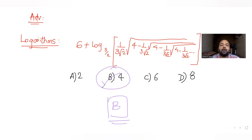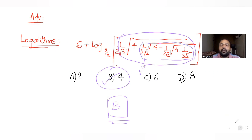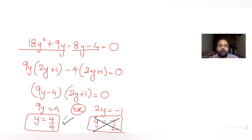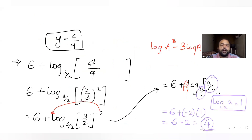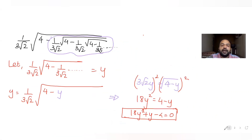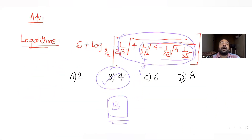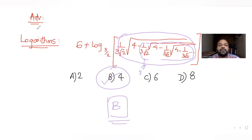I hope you have understood how to solve this type of question. We substituted the infinite nested expression as y, recognized it as an infinite series, formed a quadratic, solved it, got the positive value y = 4/9, substituted back, and got the answer 4. I'll see you again tomorrow with questions from another topic as we continue our series on JEE Advanced. Do like, share, and subscribe to my channel, and share these videos with friends preparing for JEE Advanced. Thank you.